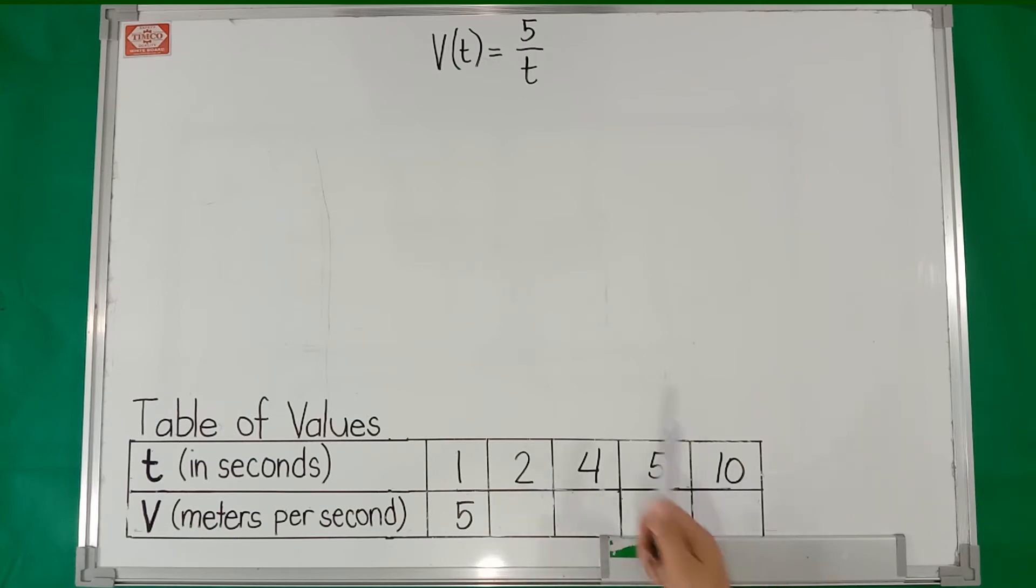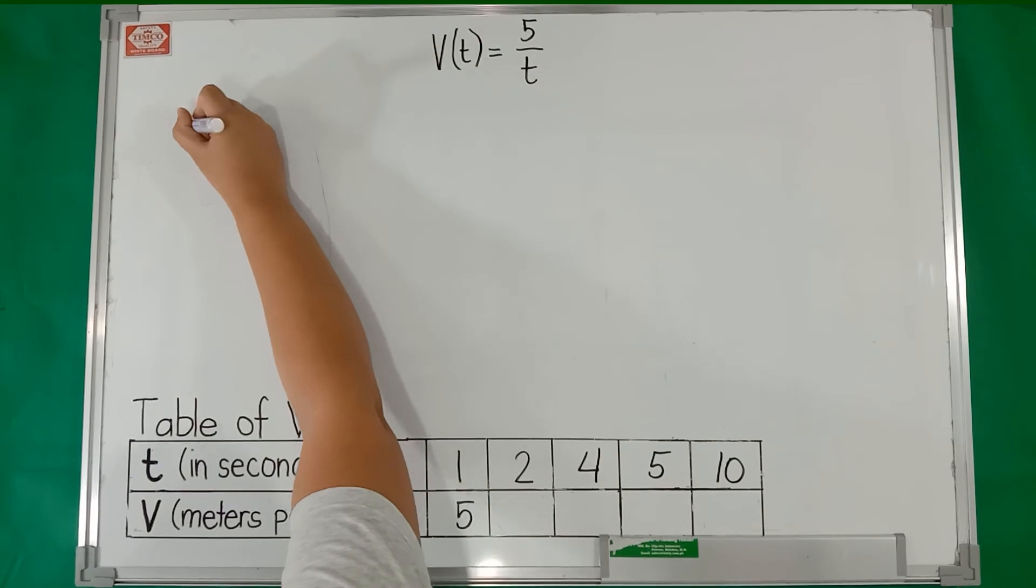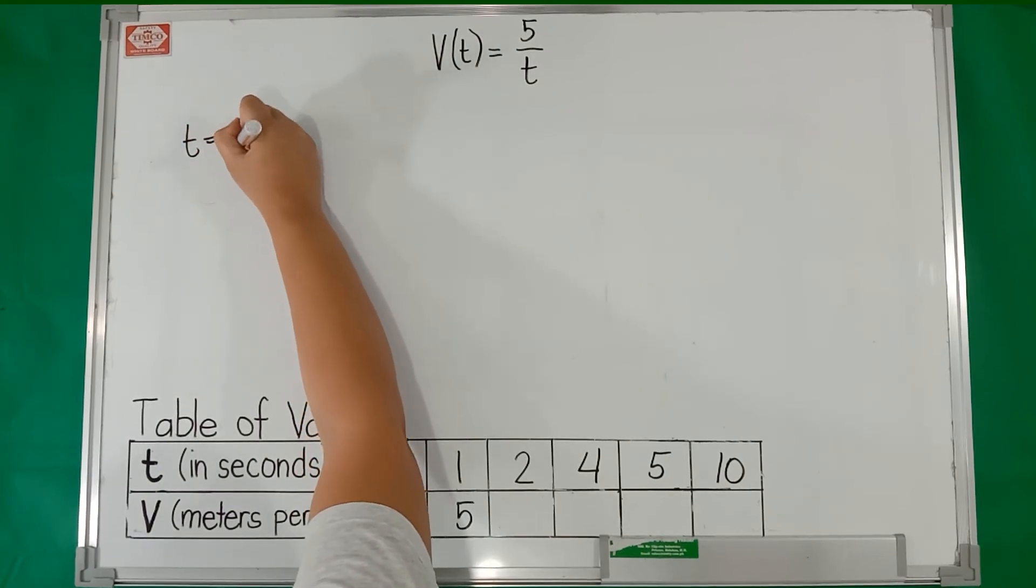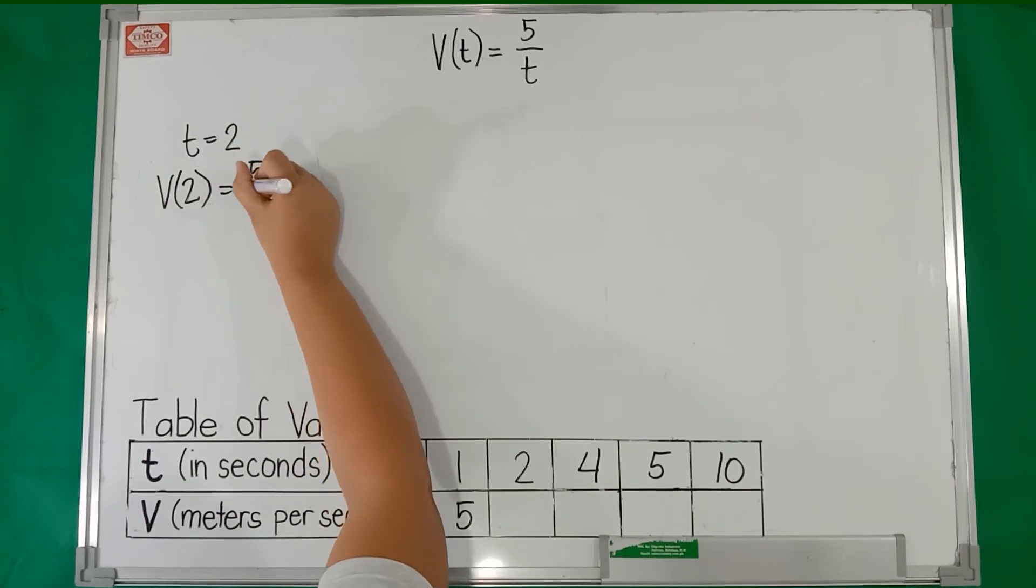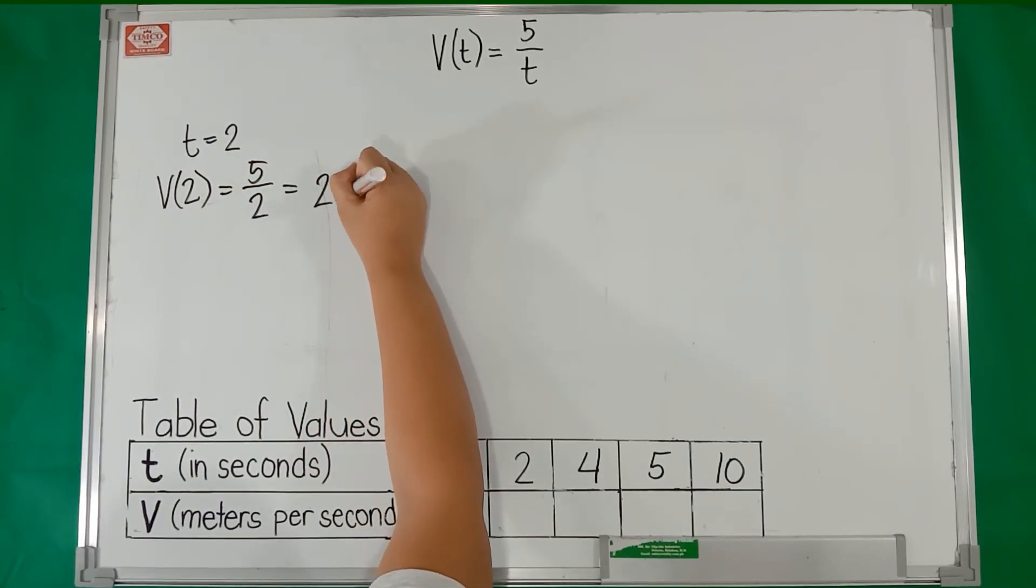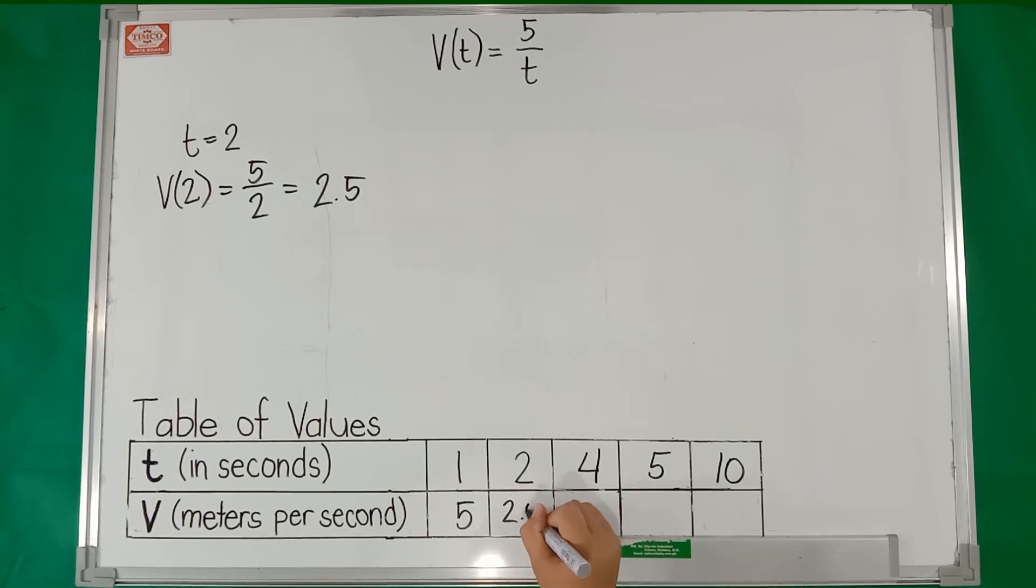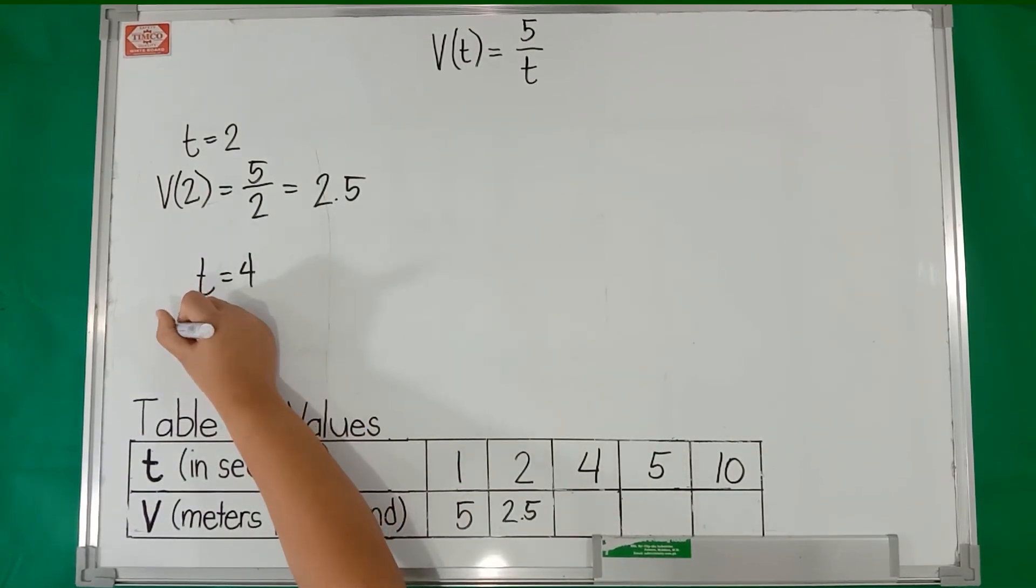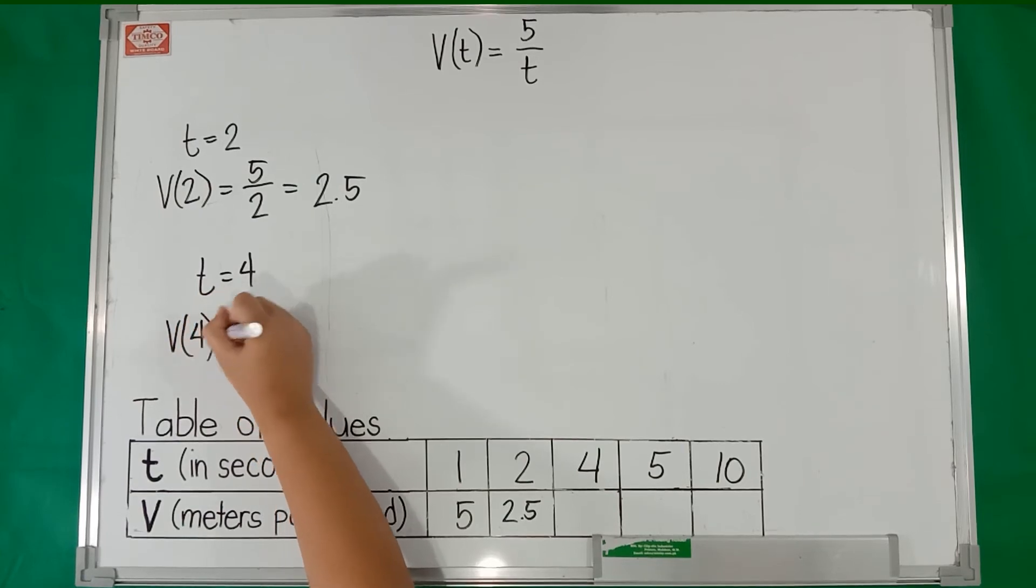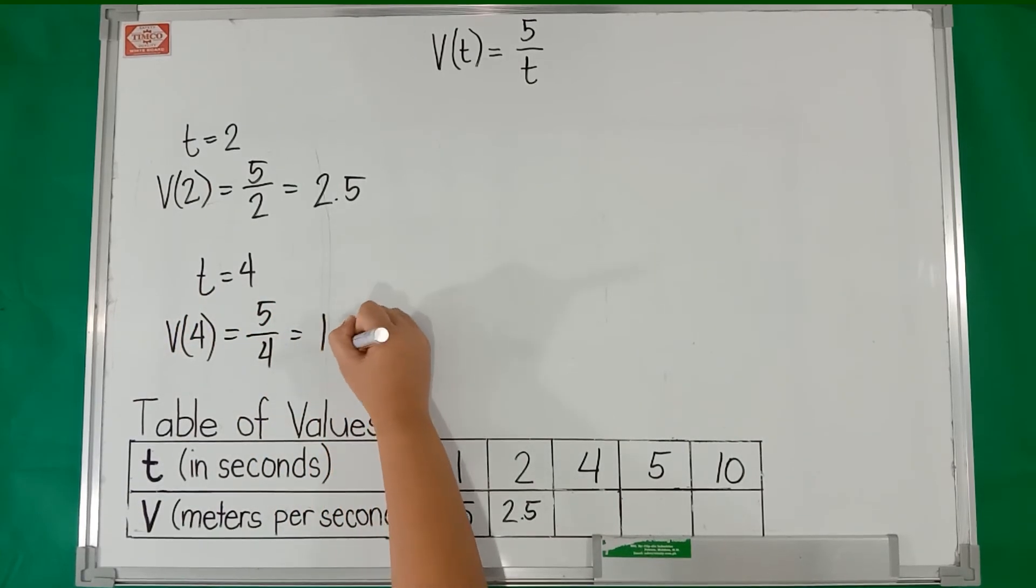Substituting each value of t in the formula we have, if t = 2, v(2) = 5/2 = 2.5. We can enter the answer on our table. If t = 4, v(4) = 5/4 = 1.25.